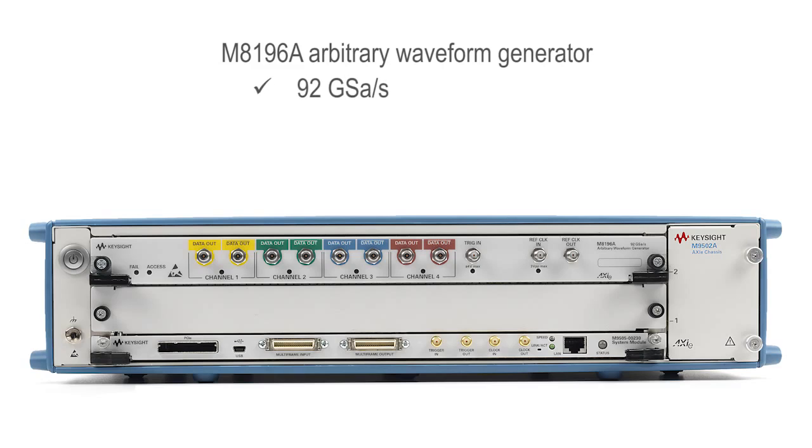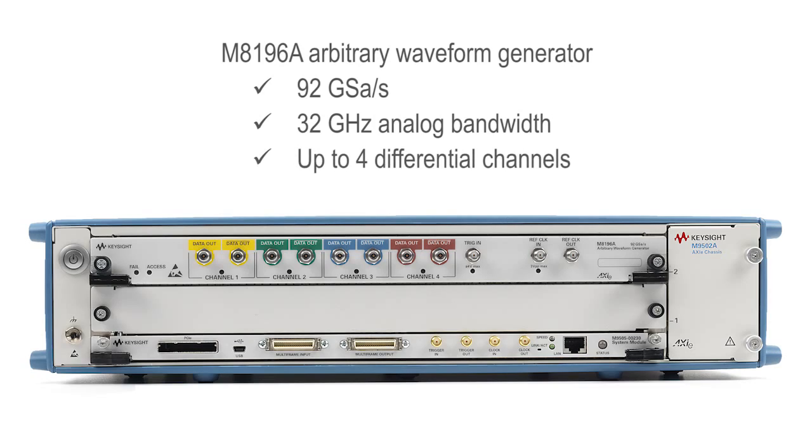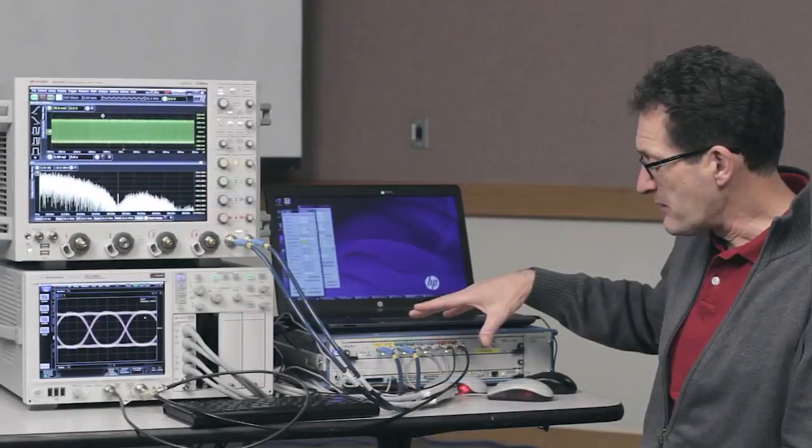It's a 92 gigasample per second, 32 gigahertz arbitrary waveform generator, which has up to four differential channels in a single AXIE module.